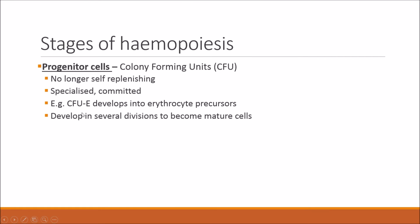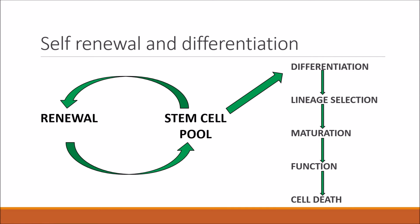These cells develop through several divisions to become mature cells. This diagram shows the difference between self-renewal and differentiation. Starting in your stem cell pool with pluripotent stem cells, these can renew and reproduce. Once they differentiate, they can no longer return to an earlier state. They go through linear selection and maturation, then perform their cell function, and eventually undergo cell death.